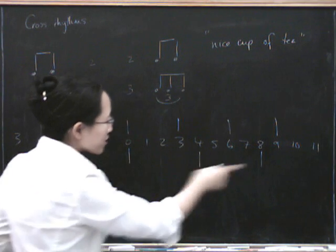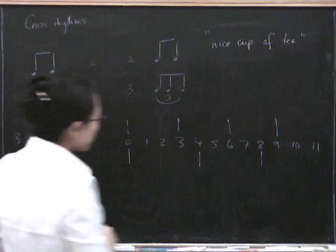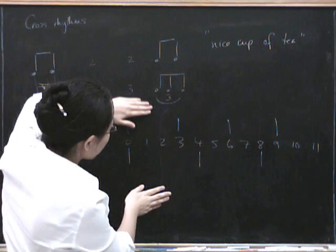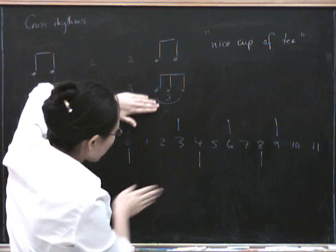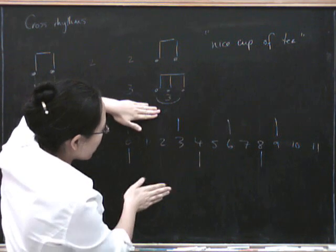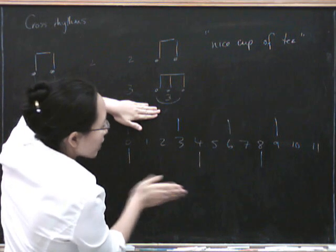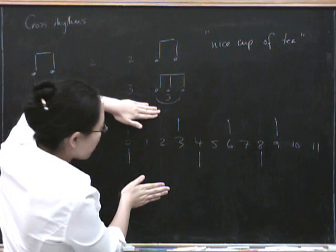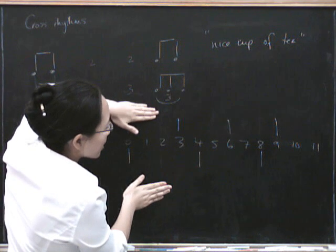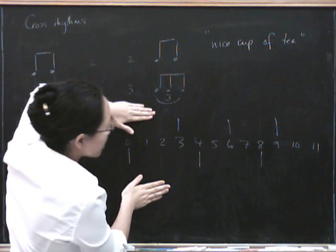We also find everything that's zero mod 4. The bottom row gives us our 3 and the top gives us our 4. Counting through 0 to 11 on the top and 0 to 11 on the bottom, then combining both, gives us the full 3-against-4 pattern across the 12 subdivisions.